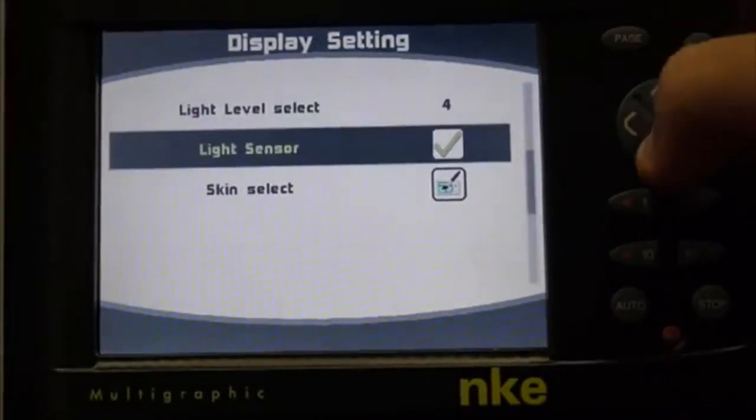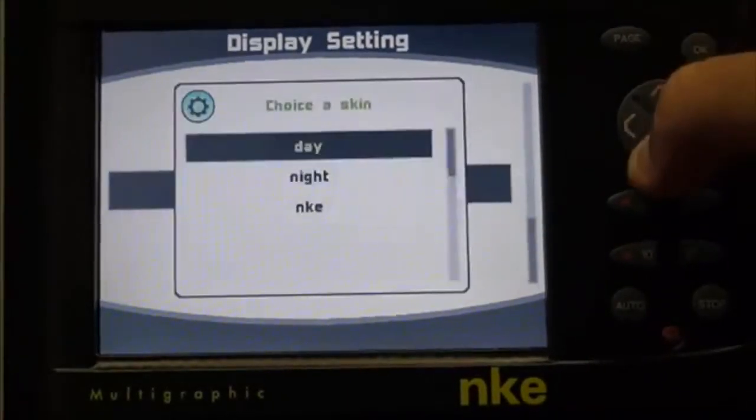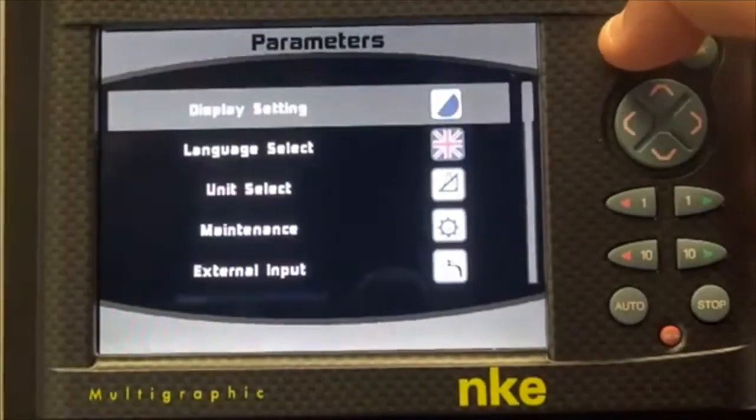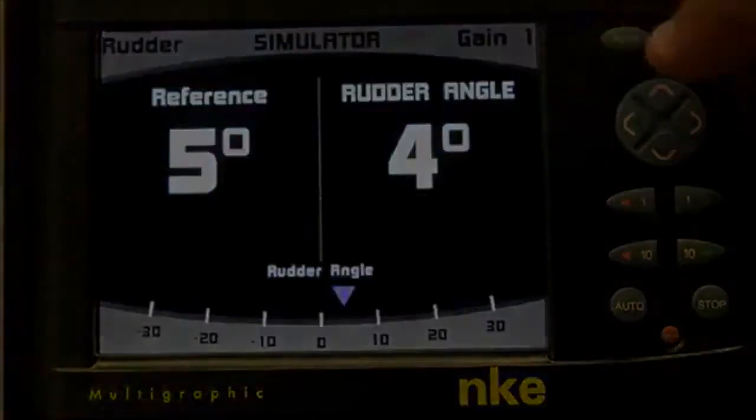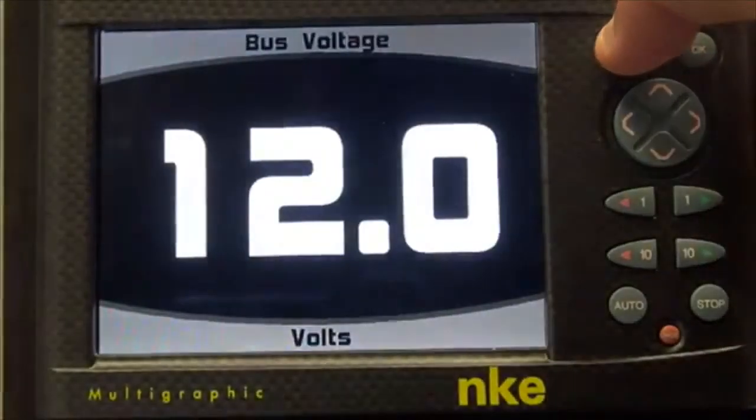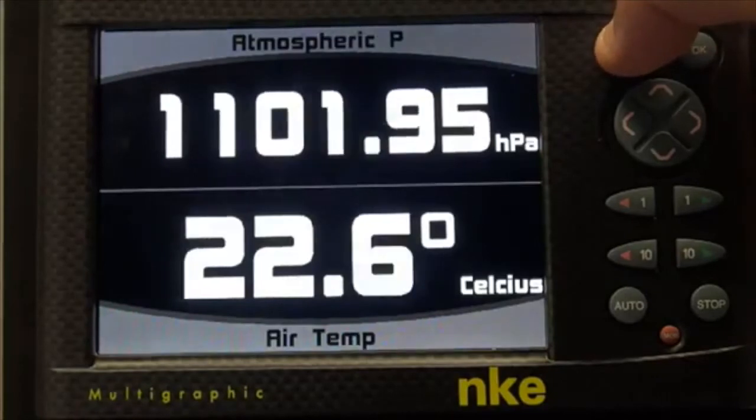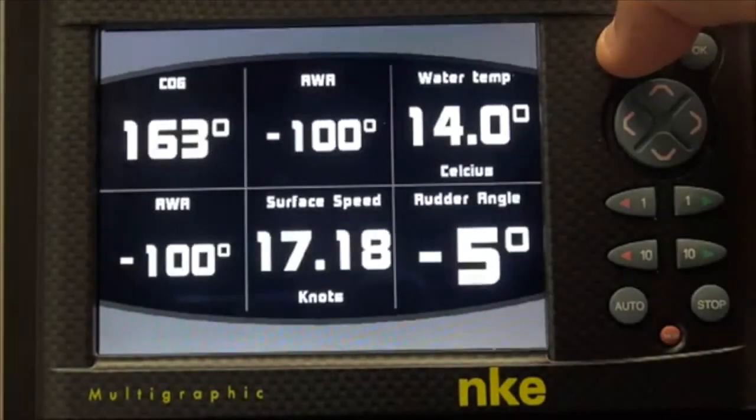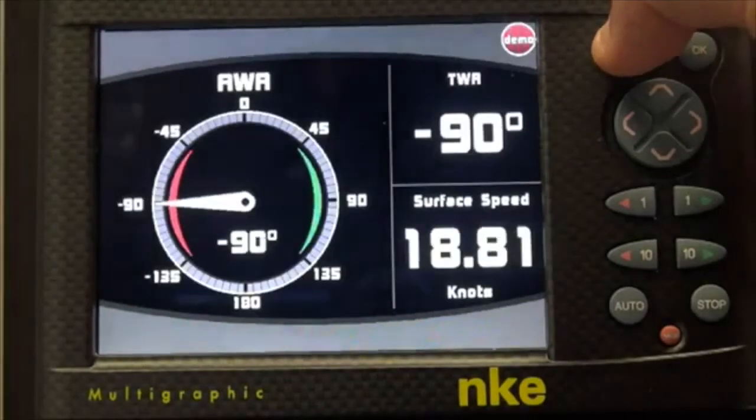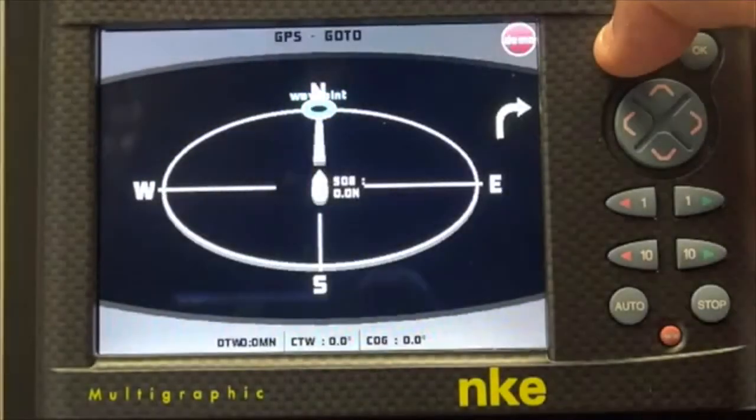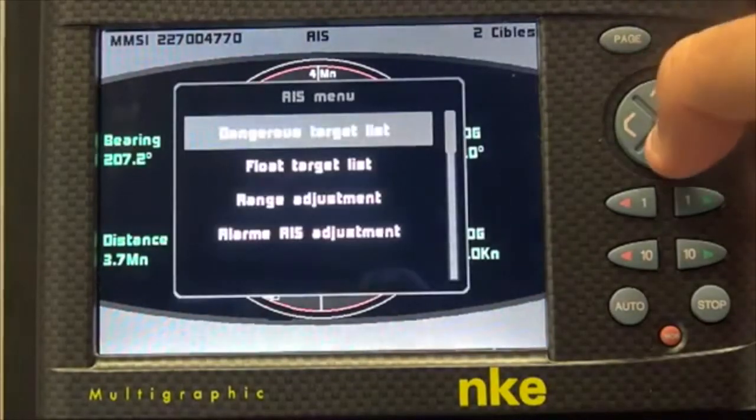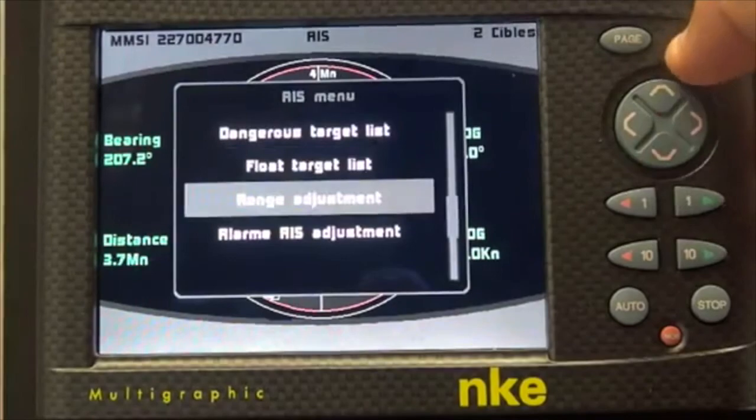Skins are selectable to adapt the display to ambient light. This Multigraphic successfully combines all features to ensure its use in extreme conditions, such as the Vendée Globe and the Mini Transat races. One multifunction display significantly reduces power consumption, and thus participates in the overall objective of reducing CO2 emissions.